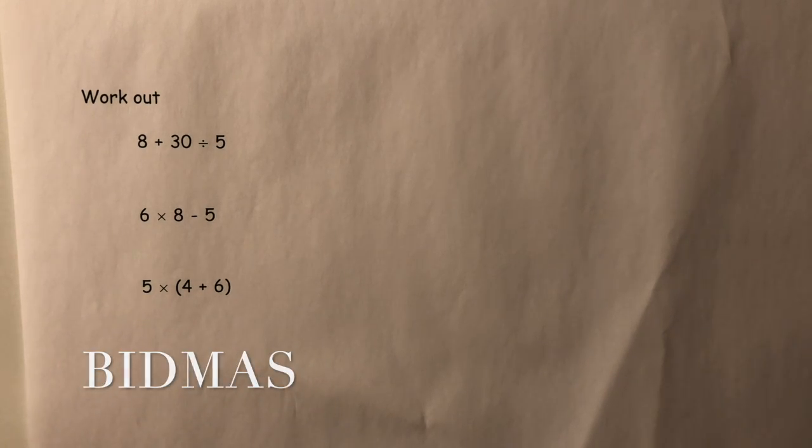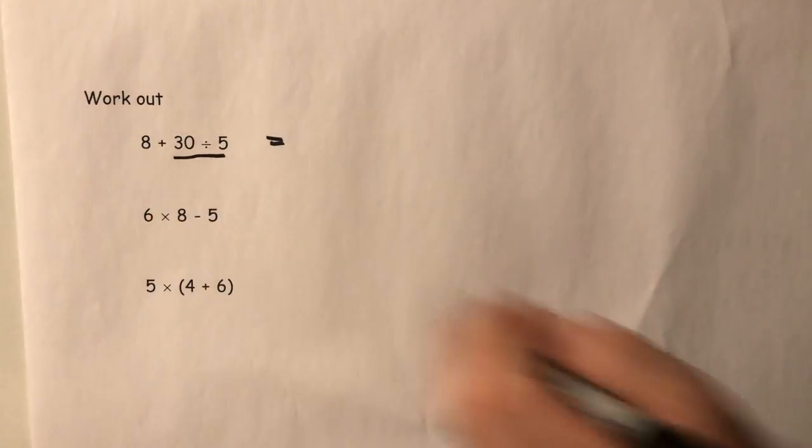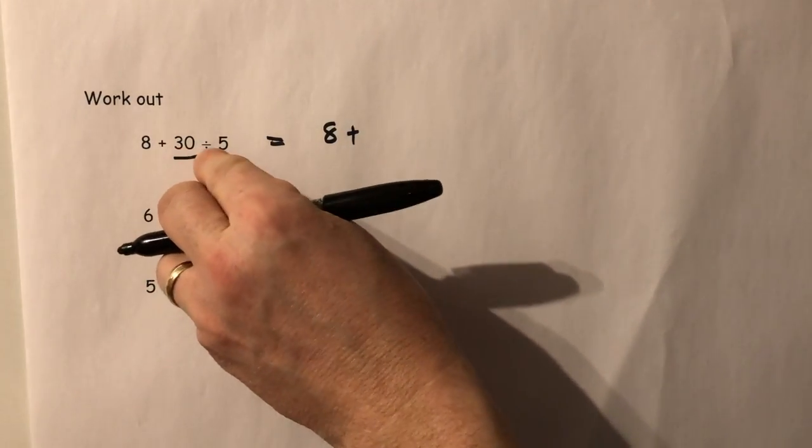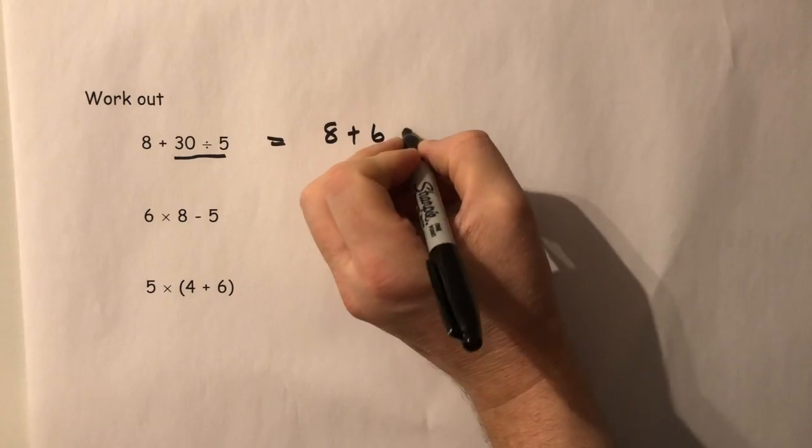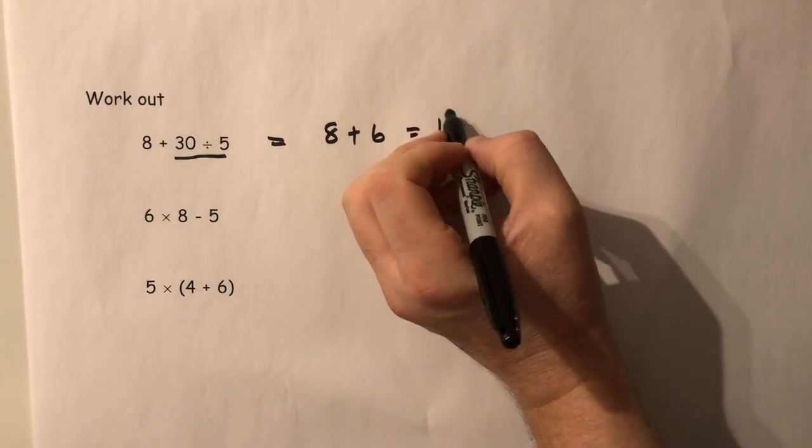A few BIDMAS questions here. In the case of the first one, you must look at this calculation first. So you have 8 plus 30 divided by 5, which is 6, and 8 plus that quantity is equal to 14. Answer.